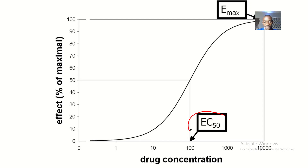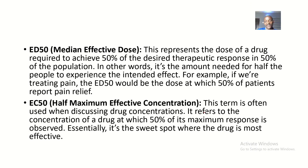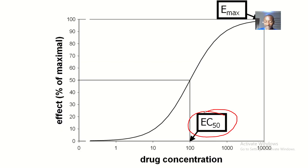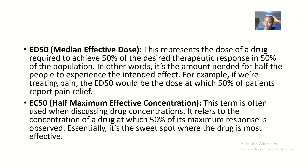So EC50 — what is the full meaning of EC50? EC50 is the half maximum effective concentration. The first difference to note is that the 'D' in ED50 means dose, while the 'C' in EC50 means concentration. So ED50 means median effective dose, while EC50 means half maximum effective concentration.